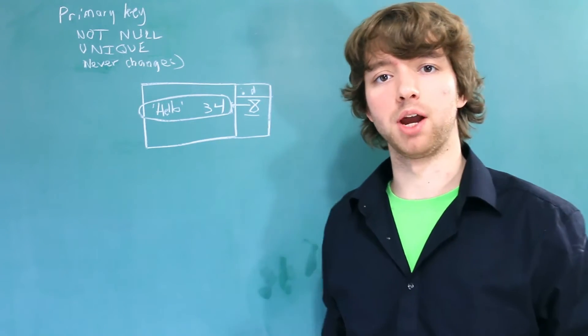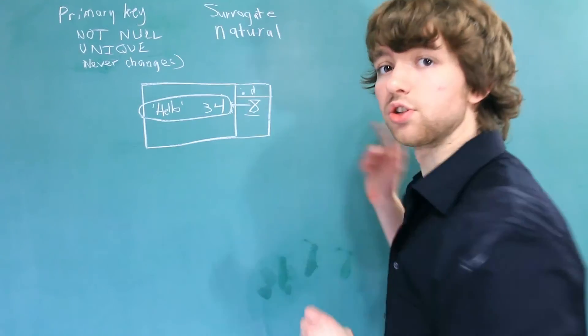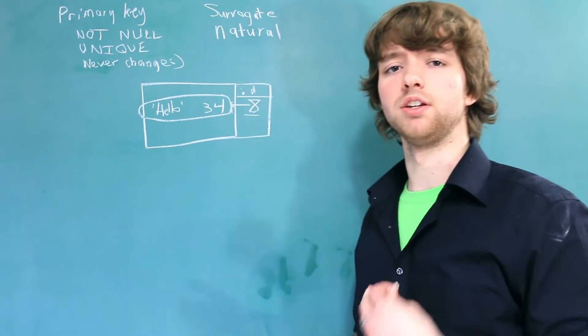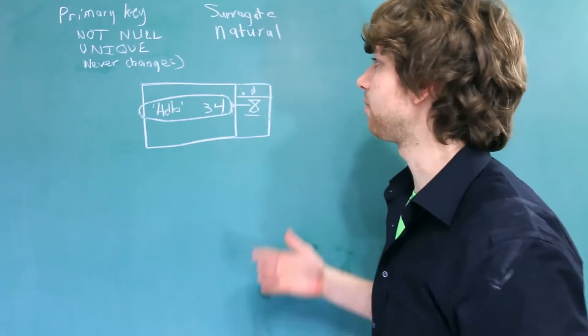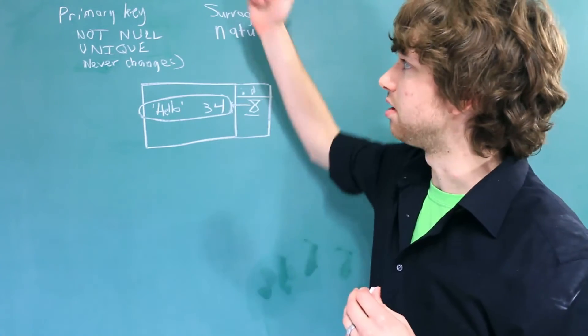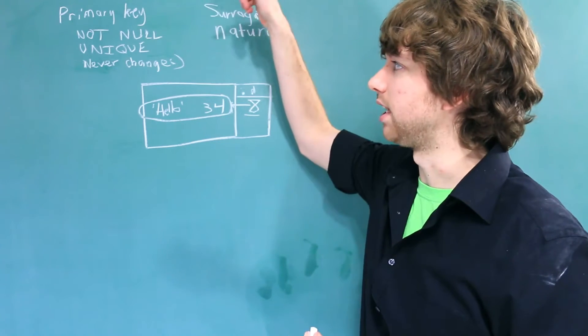Additionally, there are two categories of primary keys: surrogate keys and natural keys. Surrogate keys are just computer-generated numbers. Often this will be some sort of ID. The reason we do this is that it automatically makes it super easy to make the column not null and unique, and actually it's pretty easy to make it never change.